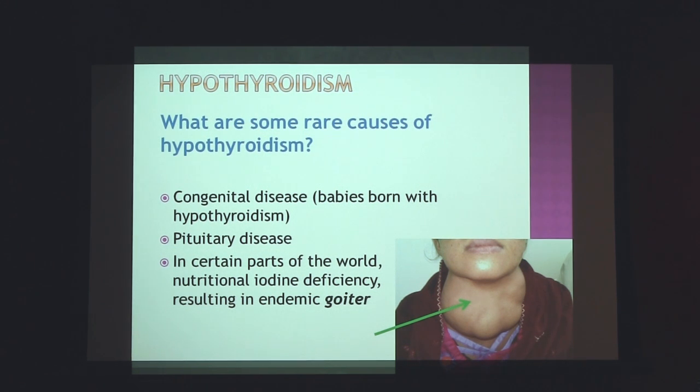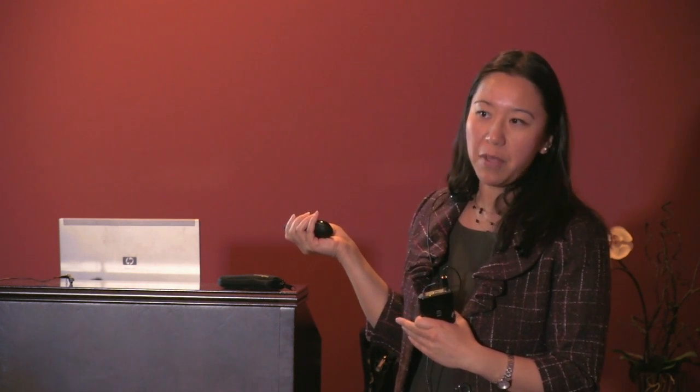Finally, in certain parts of the world, there could be a deficiency of a micronutrient called iodine. Iodine is a common part of our foods — you hear about iodized salt, and it's in breads, meats, dairy, et cetera. In some parts of the world with endemic iodine deficiency, perhaps in more mountainous areas, there's not sufficient iodine to make thyroid hormones, resulting in an underactive thyroid. The thyroid tries to compensate by enlarging — working overtime — and we call this an endemic goiter.